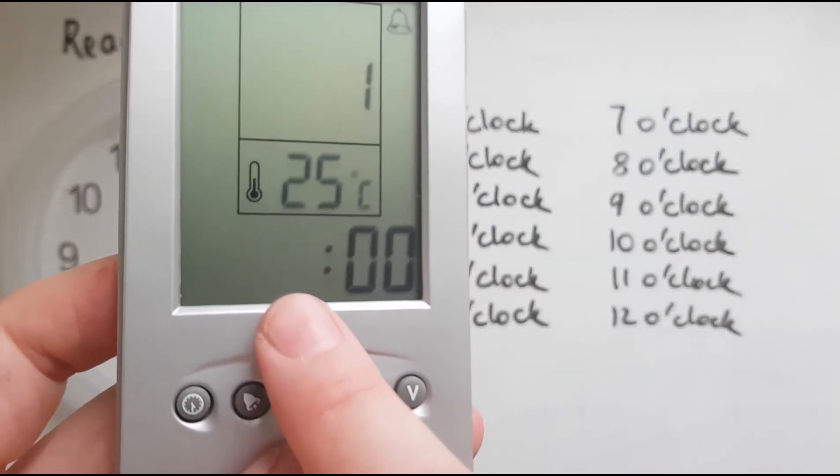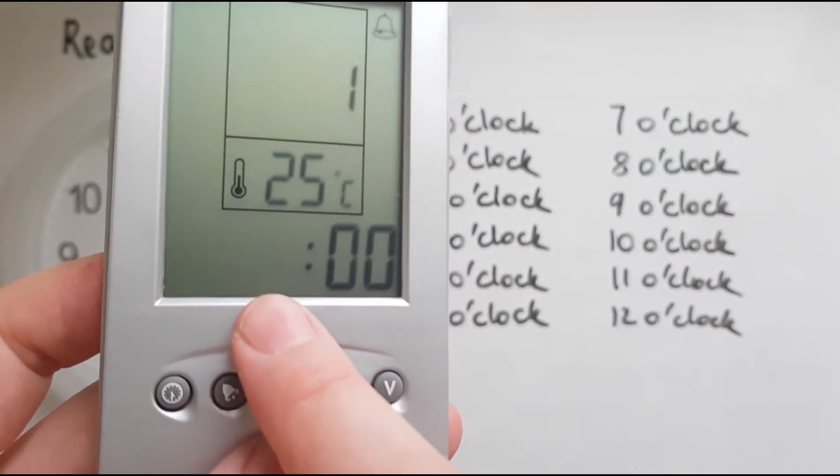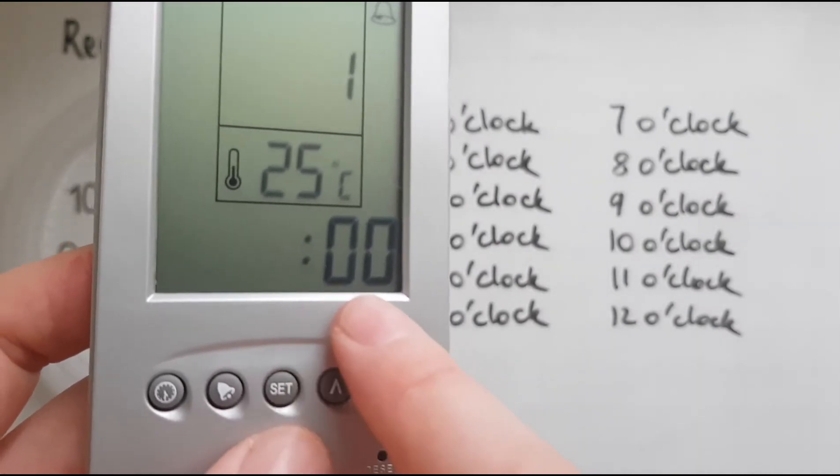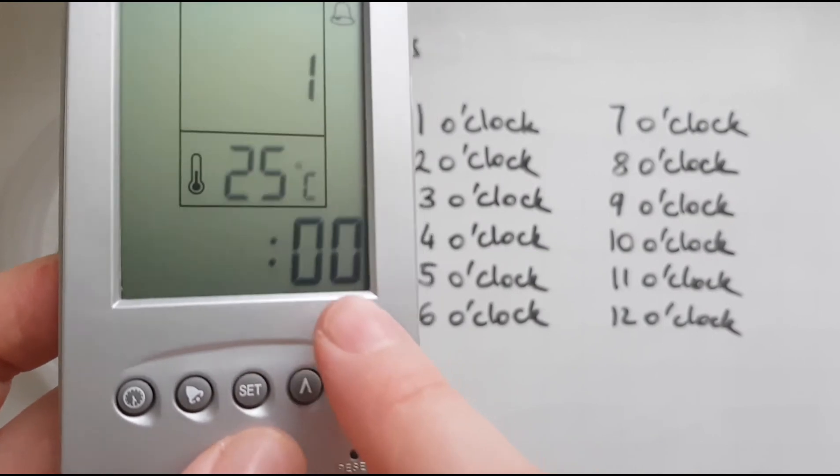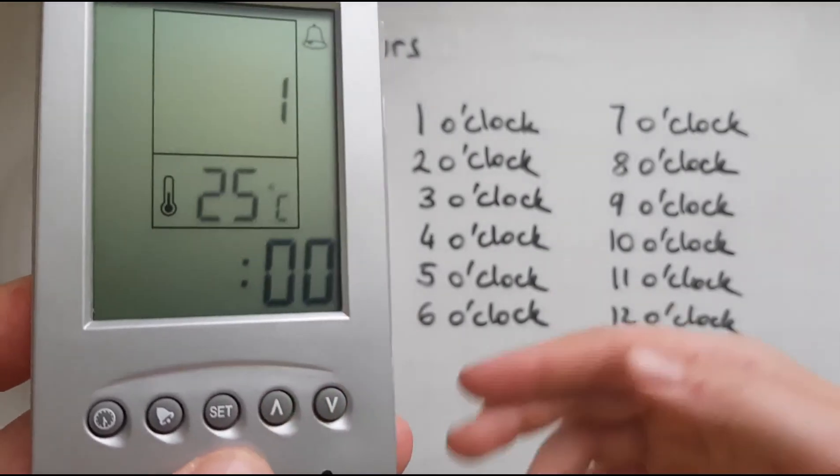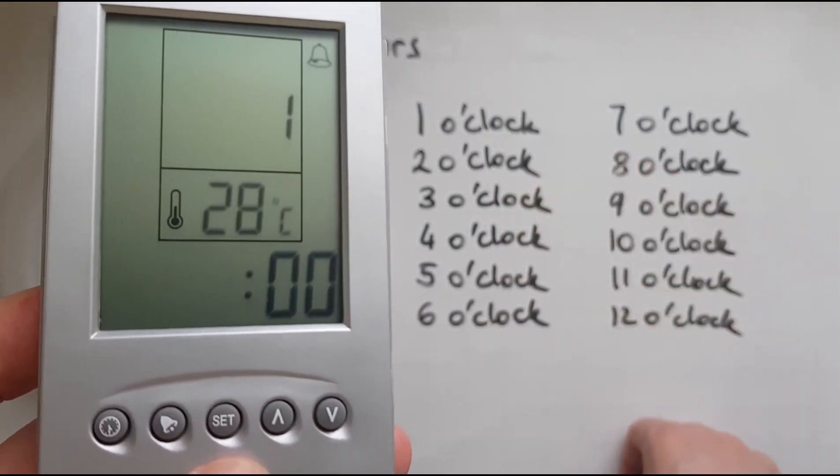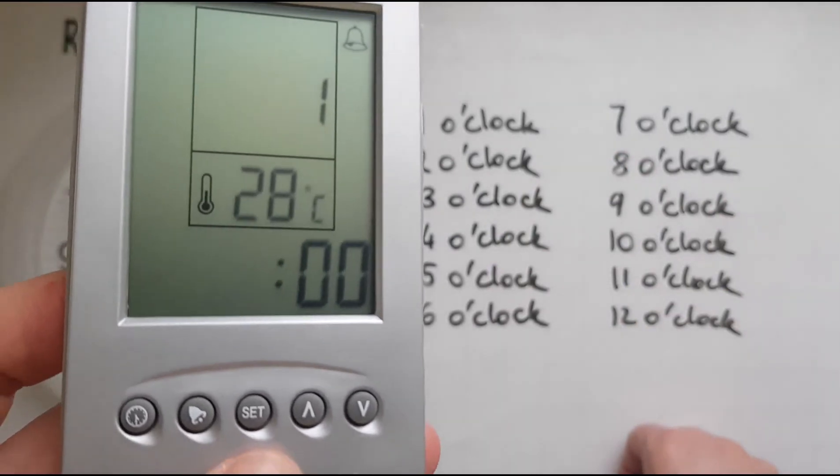As you can see, the hours are changing but the minutes remain as zero. There are zero minutes when we've got these times such as one o'clock, two o'clock, three o'clock, four o'clock—full hours.